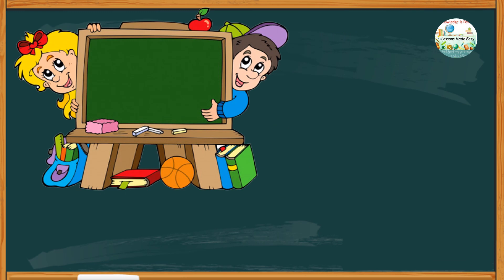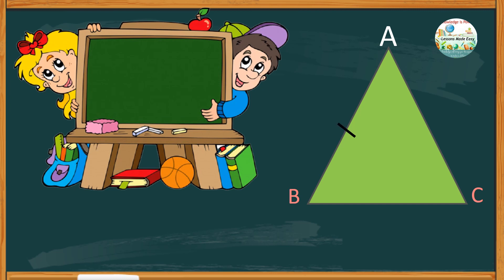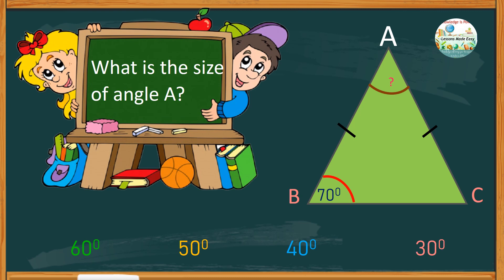Let's try the next one. The given triangle is an isosceles triangle with two equal sides. If angle B is 70 degrees, then what is the size of angle A? Is it 60 degrees, 50 degrees, 40 degrees, or 30 degrees? Shall we check our answer? For this question, the answer is 40 degrees. Considering that this triangle is an isosceles triangle where two sides are equal, therefore, these two angles are also equal. So, if angle B is 70, then angle C is also 70 degrees. These two angles together will give us a total of 140. Since the sum of the three interior angles of a triangle is equal to 180, therefore, angle A is 40 degrees.